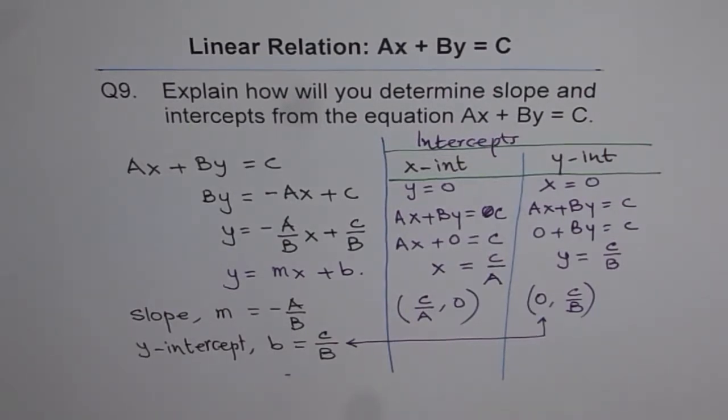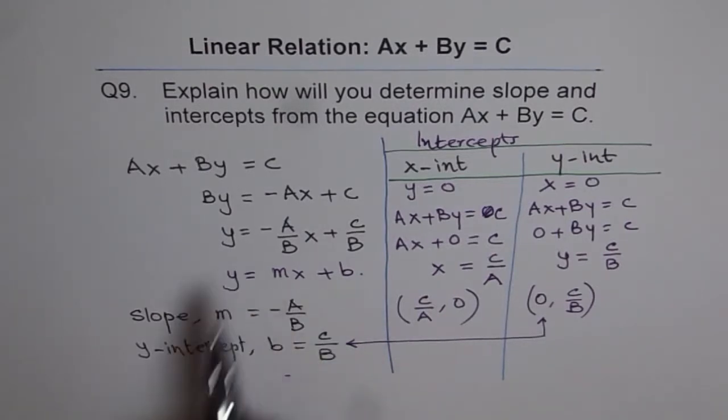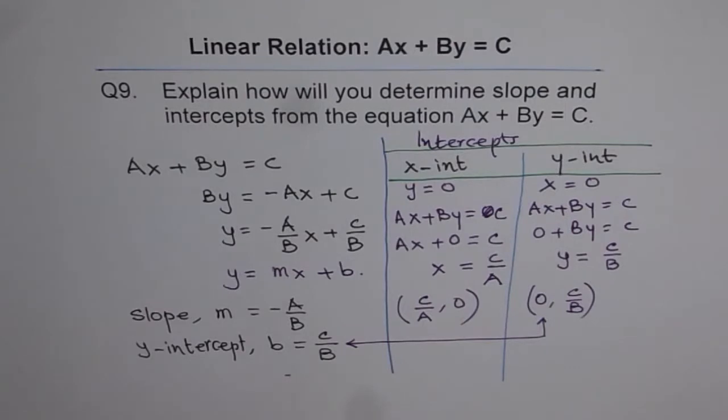So that is how you get the intercepts, as I have shown you here. And to get the slope, rearrange your equation in Y equals to MX plus B form and find slope. So that is how AX plus BY equals to C is related with slope-intercept form.